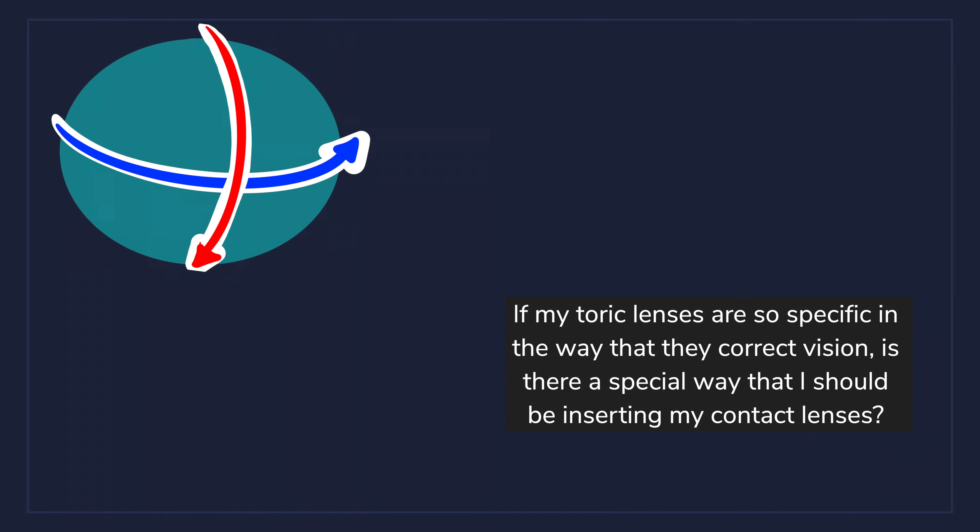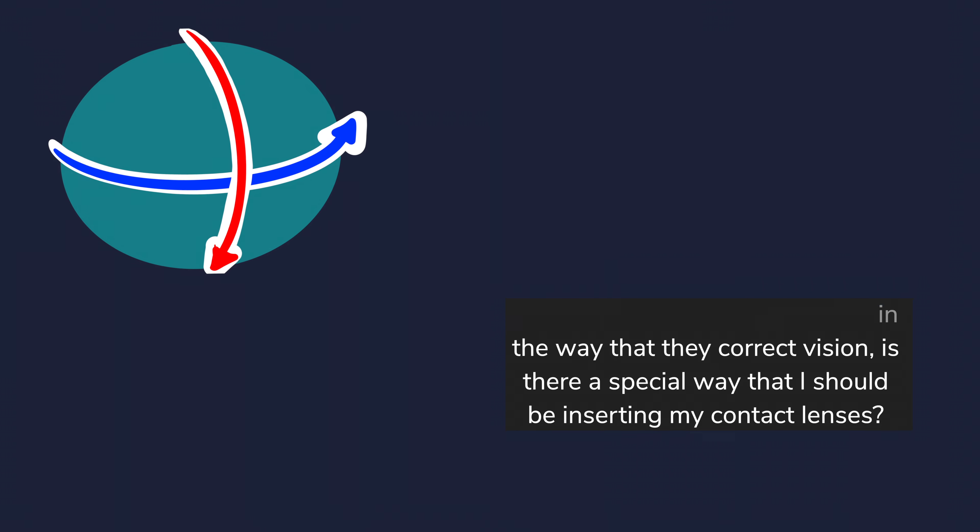If my toric lenses are so specific in the way that they correct vision, is there a special way that I should be inserting my contact lenses? Luckily not. Lens manufacturers will conveniently design it so that no matter how you put the lenses into your eye, they will stabilise onto your eyes in the correct orientation. Lens manufacturers will either make the bottom heavier so that every time you blink, the heaviest part always sinks to the bottom, or make the top and bottom thinner so that your eyelids hold it in place. This is why your contact lenses might just take a few minutes before your vision starts to clear up after putting them in.